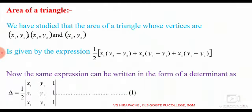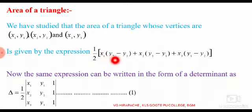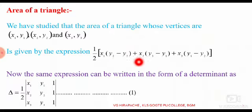Now, how to find the area of a triangle using determinants. In the previous class — that is, in the PUC first year class — we saw how to find the area of a triangle when the vertices are (x1, y1), (x2, y2), and (x3, y3). By using two-dimensional geometry, the area of a triangle is given by: 1/2 times [x1(y2 − y3) + x2(y3 − y1) + x3(y1 − y2)]. This same expression can be rewritten in the form of a determinant.